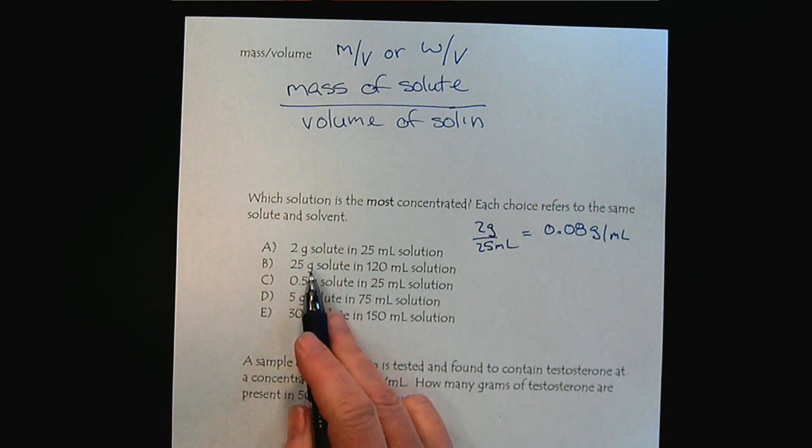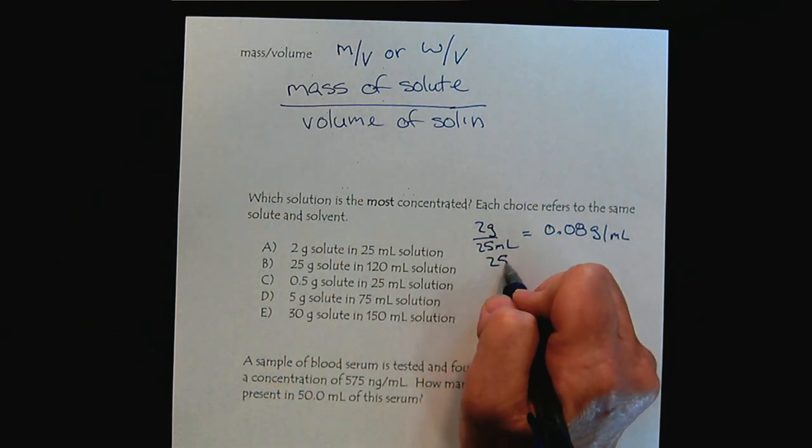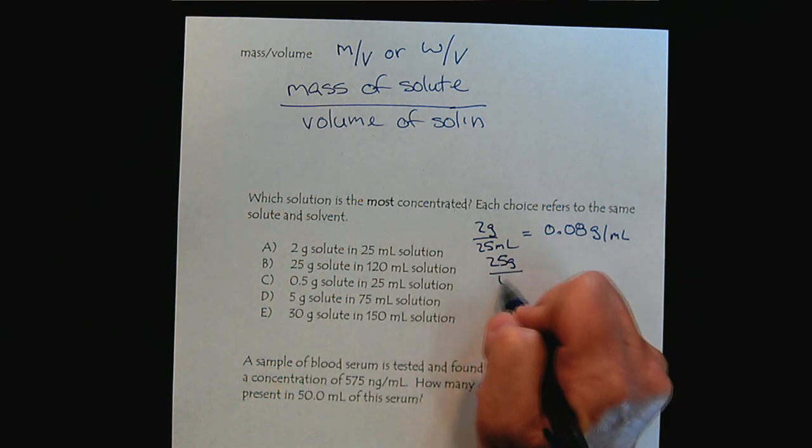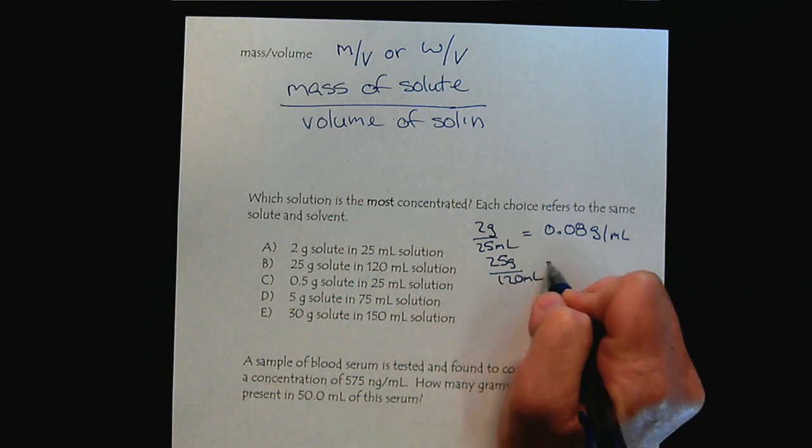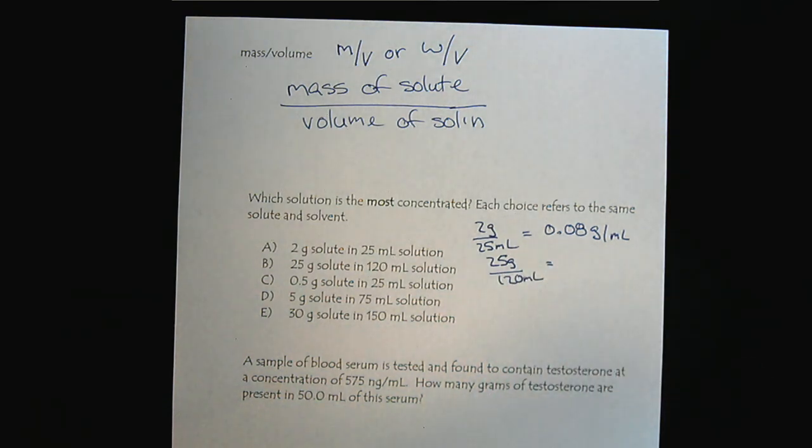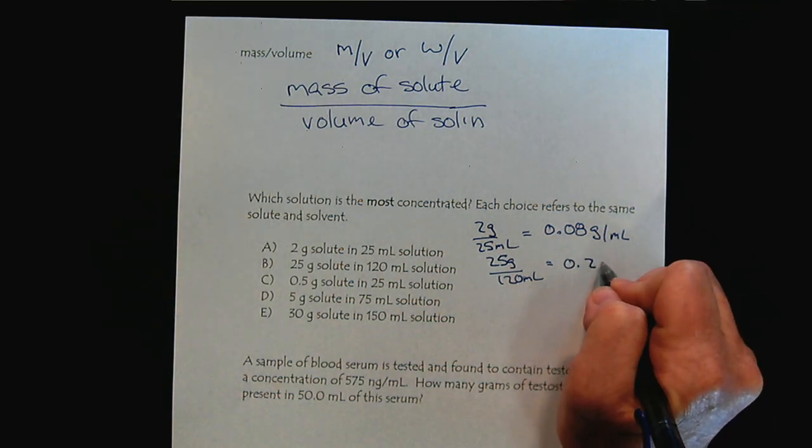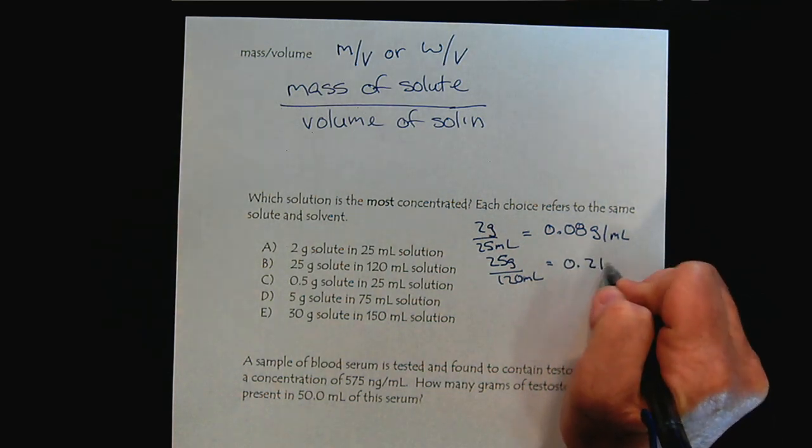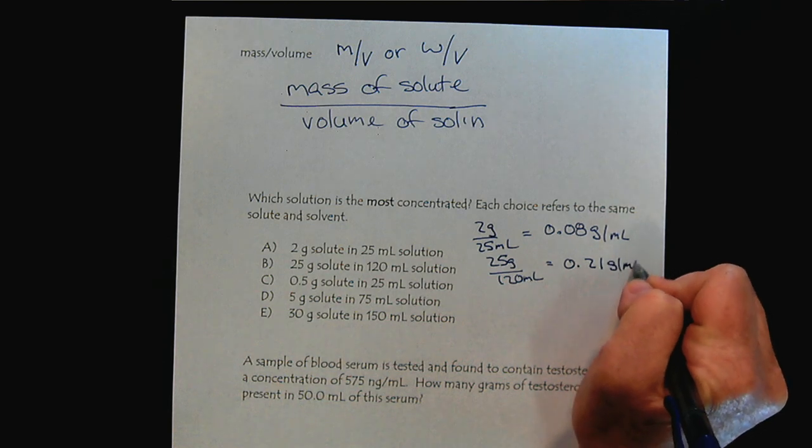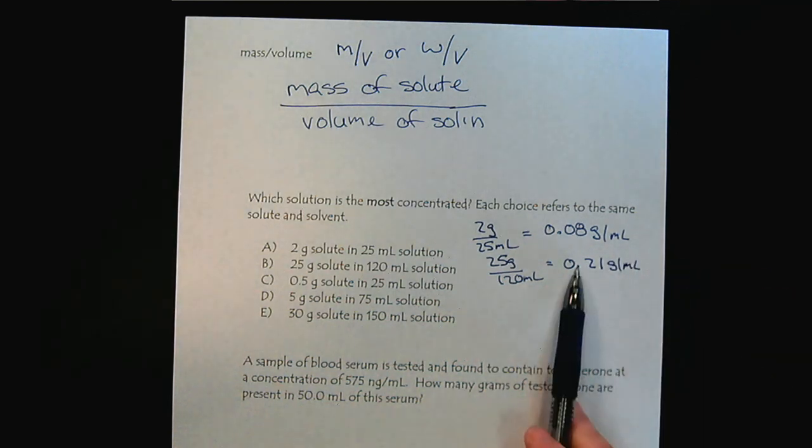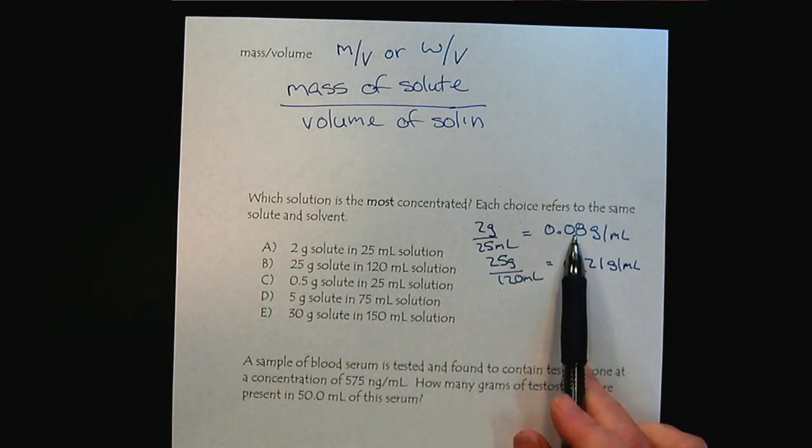Let's compare this to solution B. We have 25 grams of solute dissolved in 120 milliliters of solution. We punch those values into our calculator and we see that this solution has 0.21 grams per milliliter. We can already see that solution B has a higher concentration than solution A.